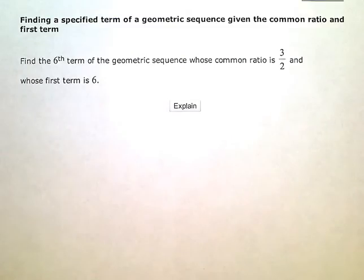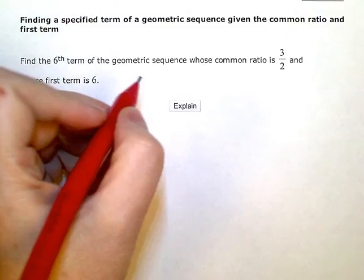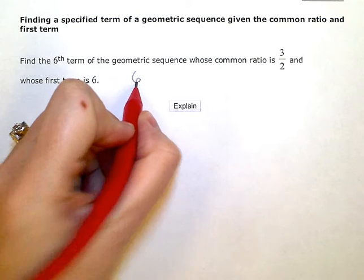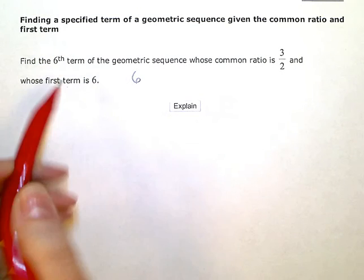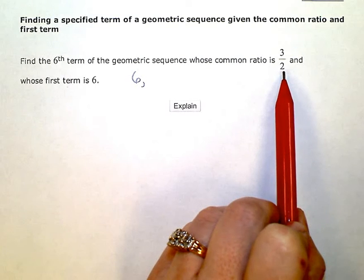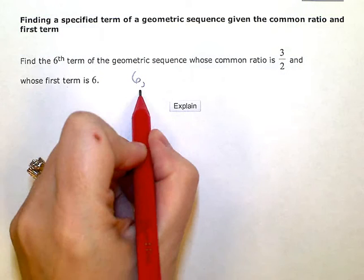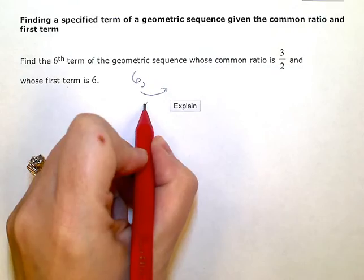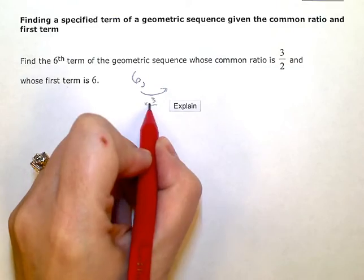So I know this sequence is going to look like this. The first term is six, so it starts with six. And then if the common ratio is three halves, that means to get each successive term, I need to multiply by three halves.